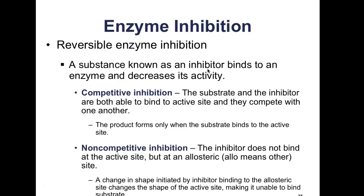Enzyme inhibition: in reversible enzyme inhibition, a substance called an inhibitor binds to the enzyme and decreases its activity. There are two types. In competitive inhibition, the inhibitor and substrate both compete to bind to the active site. The product forms only when the substrate binds to the active site — not the inhibitor.